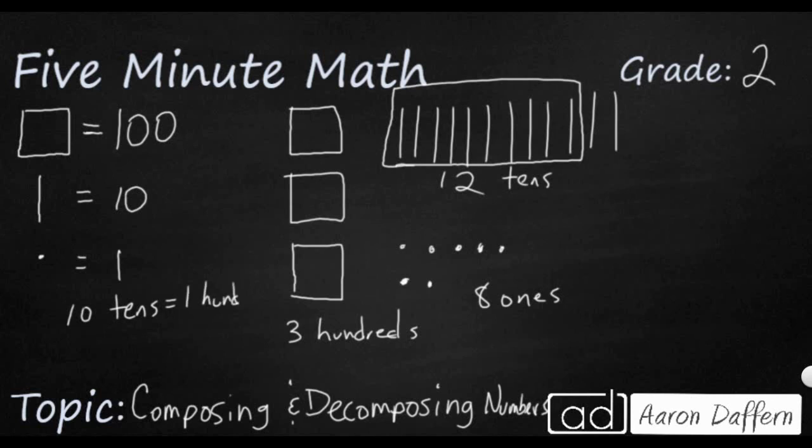And so rather than counting all of these 10s, I'm going to take all of these 10s and I'm going to add it over here. We're just going to put a little line through it so we know it's gone. And I'm going to add it over here. So now instead of three hundreds, I have four hundreds, because I exchanged 10 tens for 100.